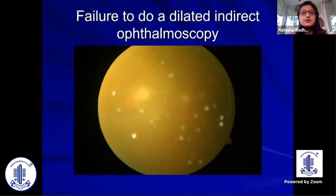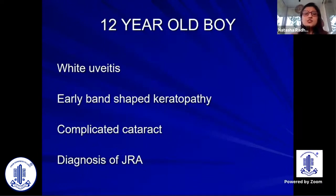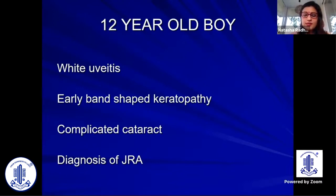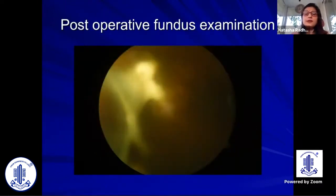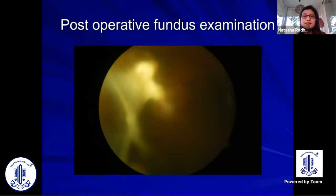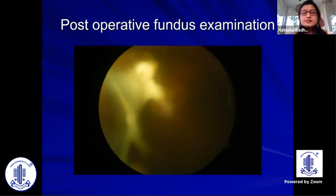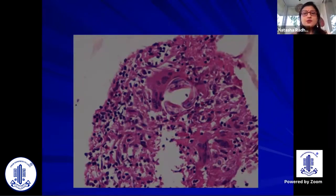Another mistake is failure to do a dilated indirect ophthalmoscopy. A 12-year-old boy presented with white uveitis, early band-shaped keratopathy, and complicated cataract. The first diagnosis was juvenile idiopathic arthritis, so he was put on immunosuppression and underwent cataract surgery. After cataract surgery, we found a granuloma in the fundus. In white uveitis in children, it is not enough to jump to a diagnosis of juvenile idiopathic arthritis — other causes can produce white uveitis with band-shaped keratopathy. This patient had a Toxocara granuloma causing the uveitis.